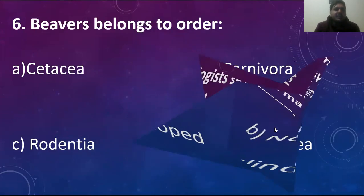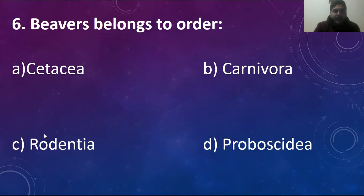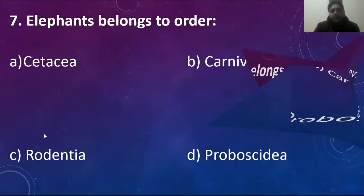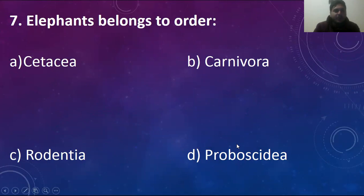MCQ number six: beavers belong to order. Beaver is a kind of rodent, so definitely this one does not belong to Cetacea, Carnivora, or Proboscidea. The right answer is option C, Rodentia — like rats also belong to this group. MCQ number seven: elephants belong to the order Proboscidea. The elephant has a long proboscis, so the answer is Proboscidea due to the presence of the proboscis.